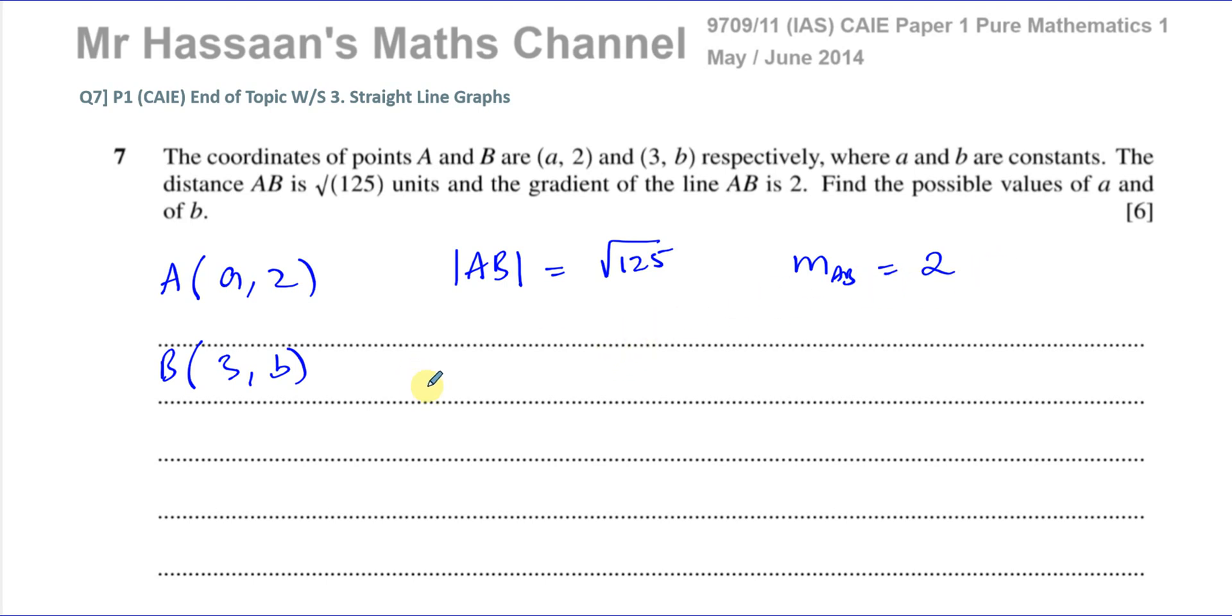If we look at the gradient first, which is probably the easier thing to do, we know that the gradient of a line is the change in Y. So you can say yB minus yA over the change in X, which is xB minus xA. I've put it in terms of these letters. It doesn't matter which way I do it. I could say y2 minus y1 over x2 minus x1.